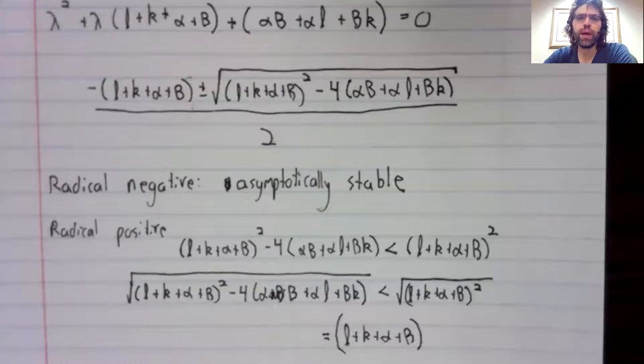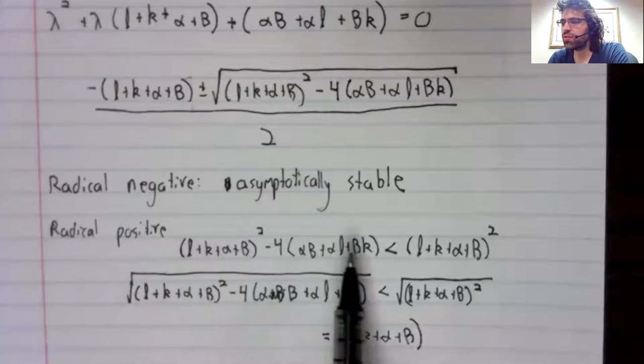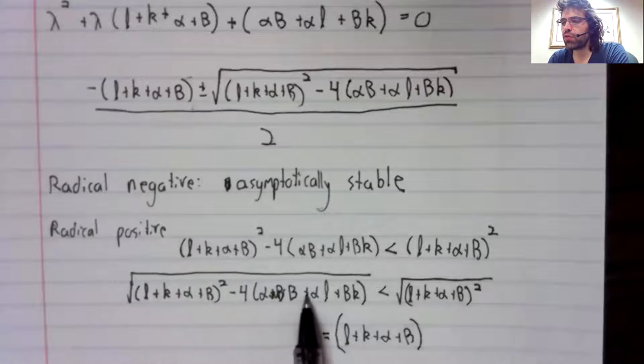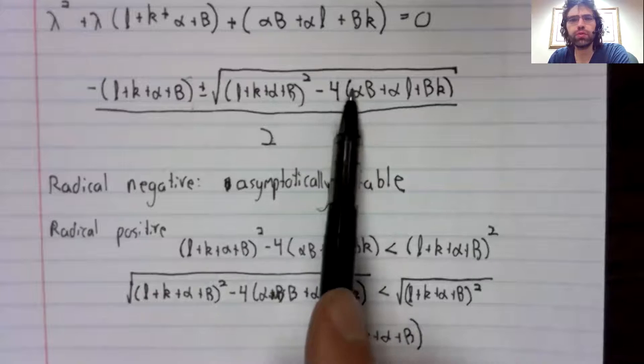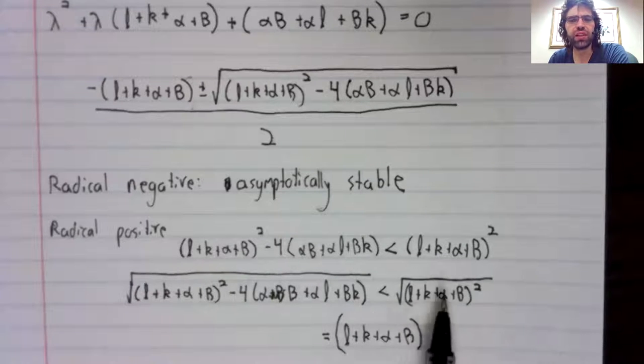The square root is monotonic. So this being less than this makes the square root that appears here be less than this square root, which equals this.